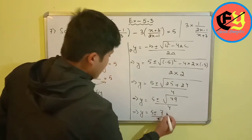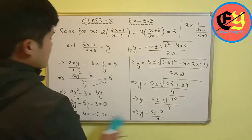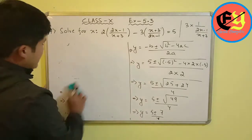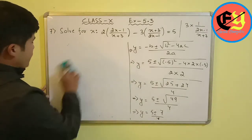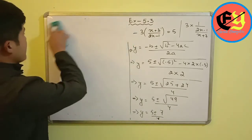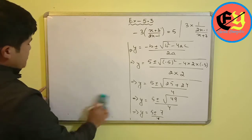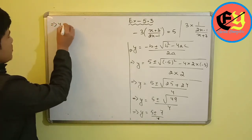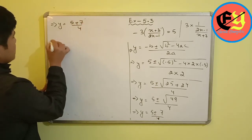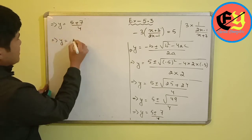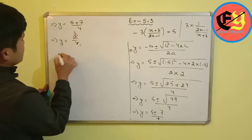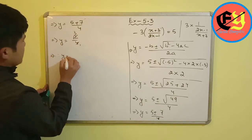Taking y equals (5 plus 7)/4 equals 12/4, so y equals 3. Taking y equals (5 minus 7)/4 equals minus 2/4, so y equals minus 1/2.